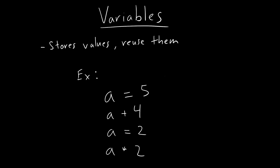It's just like in math — if you have a variable, it means you are storing values, and it can be different values. For example, when you have a function like f(x) = y, x is a variable, and depending on what x is, y would be different. That's pretty much what it is.